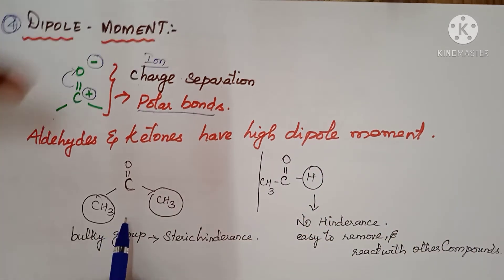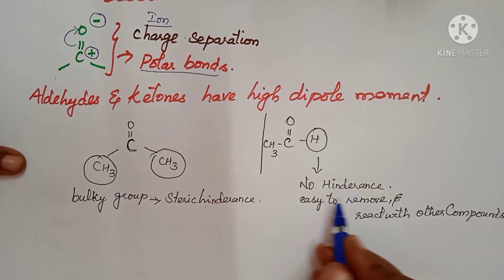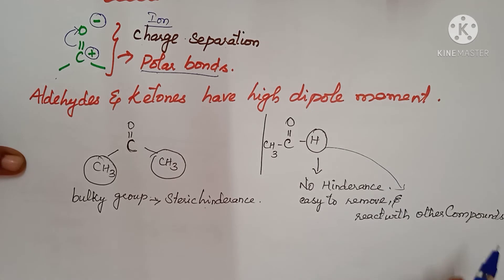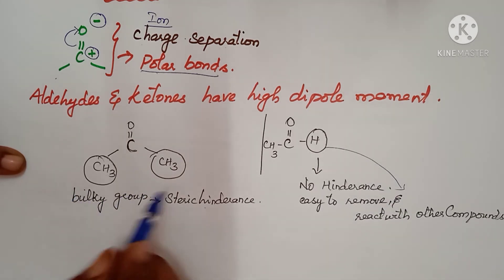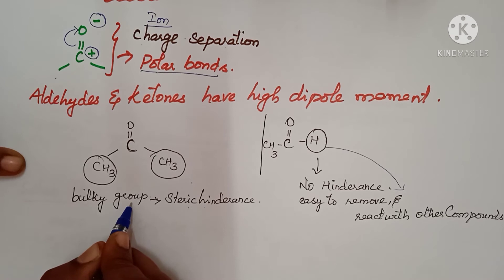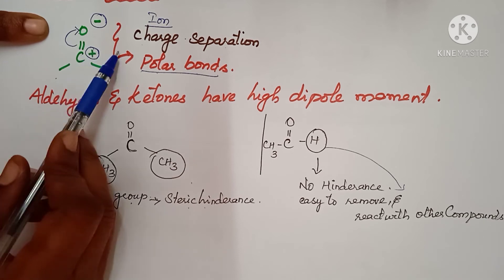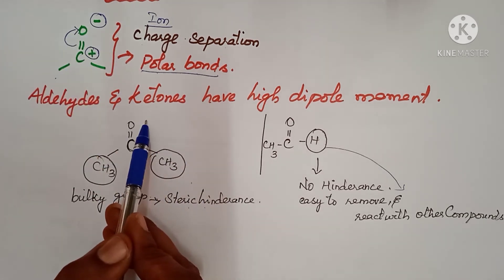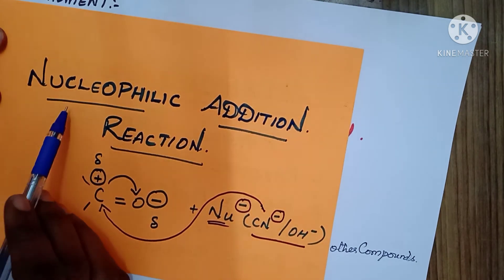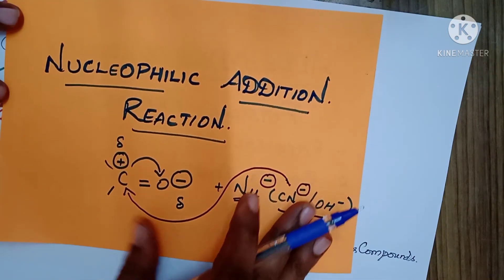Aldehydes and ketones have high dipole moment due to the polar carbonyl bond. Aldehydes have no steric hindrance because one side is hydrogen, making them easy to react. Ketones have steric hindrance due to bulky alkyl or aryl groups on both sides. Now we will discuss nucleophilic addition reaction, which is very important.